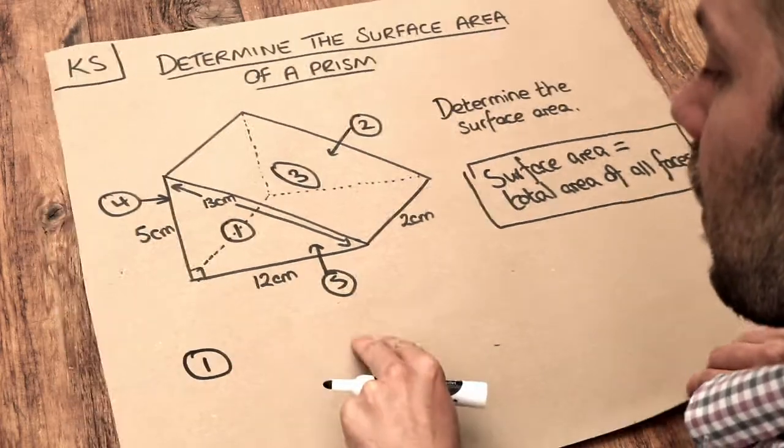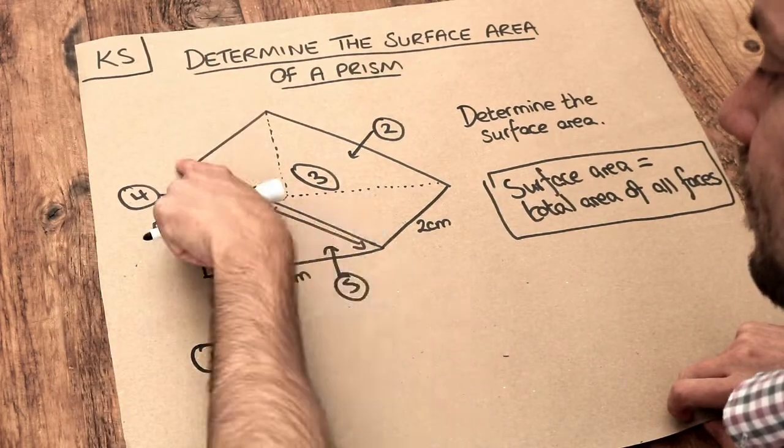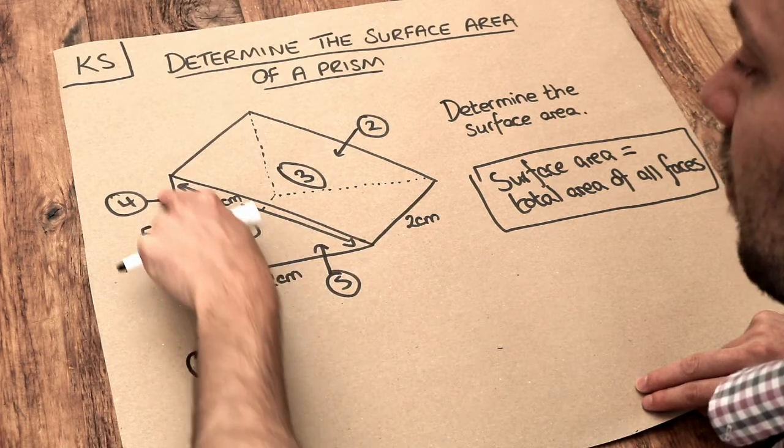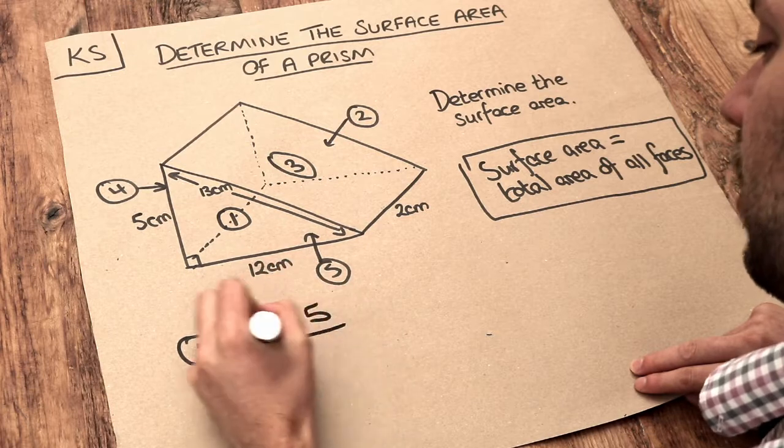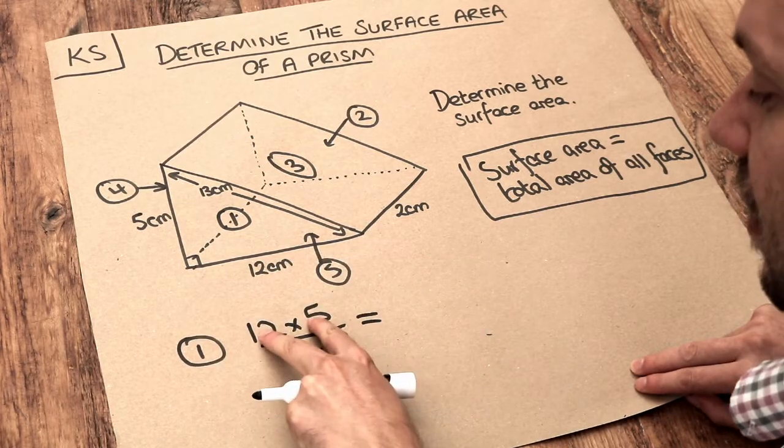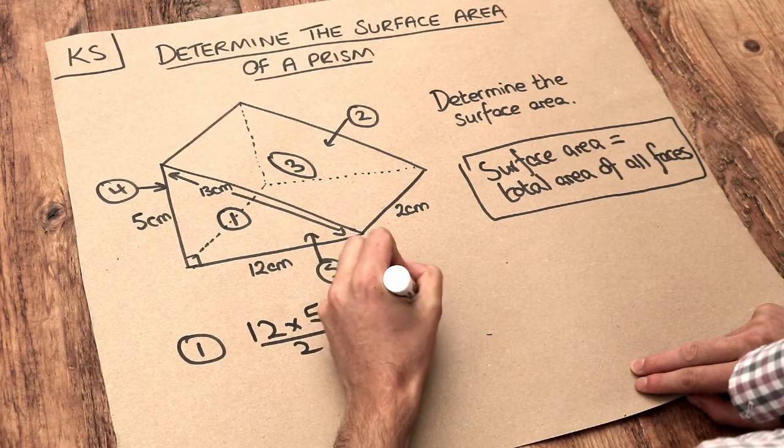So face one, that is a triangle and remember the area of a triangle is just base times height divided by two. So base times height divided by two, that's 60 over 2, that's 30 centimeters squared.